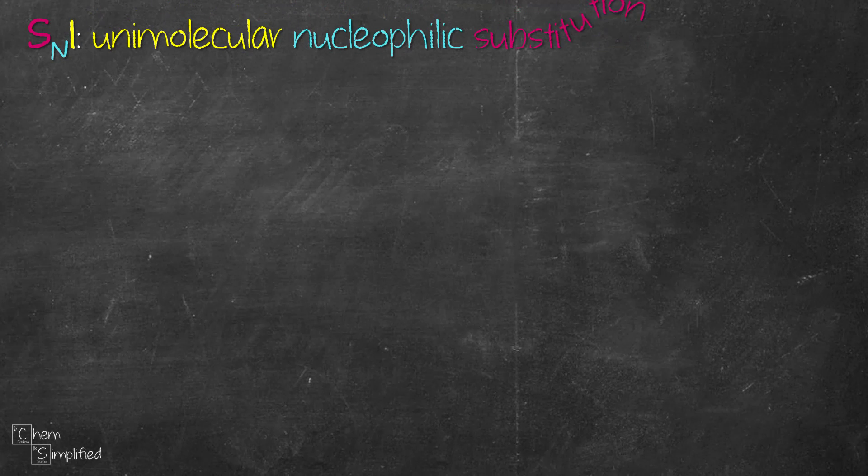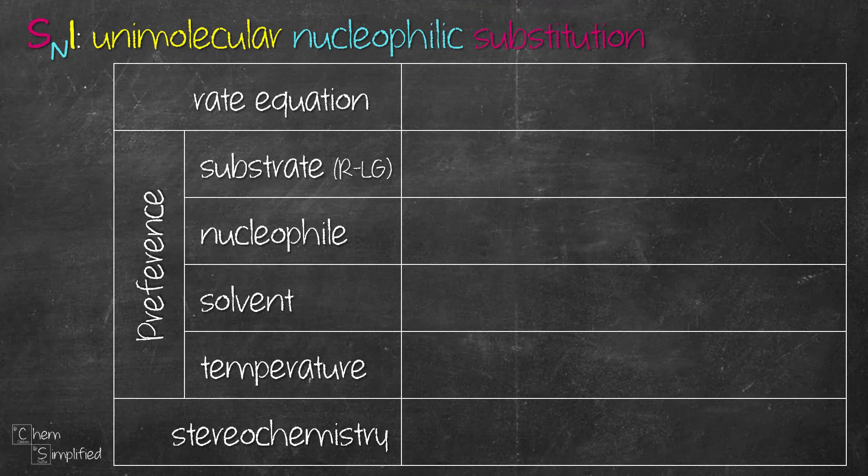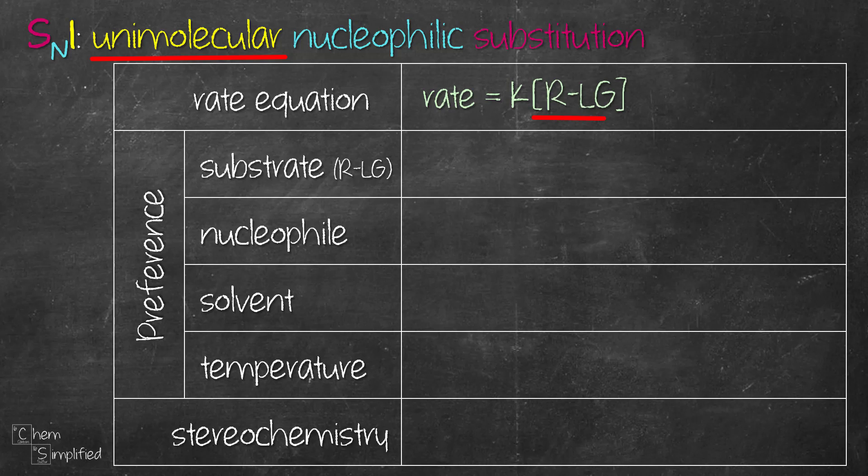SN1 stands for unimolecular nucleophilic substitution reaction. There are two components involved: one is the substrate that has an alkyl group attached to a leaving group, abbreviated as RLG, and another is the nucleophile. SN1 is unimolecular because the rate of the reaction depends on the concentration of substrate only, making it a first-order reaction.